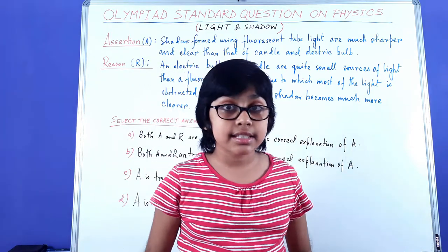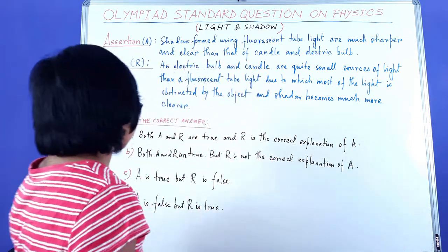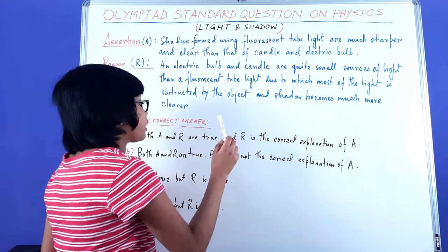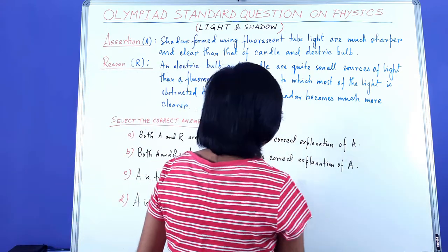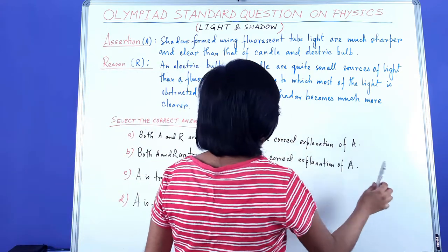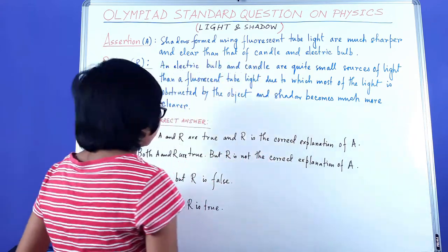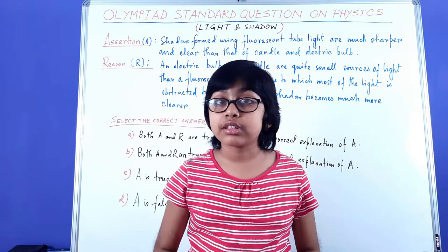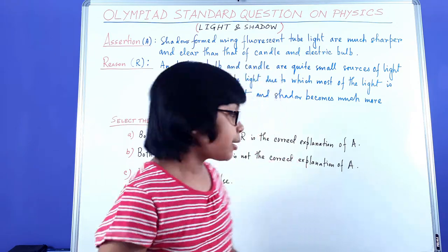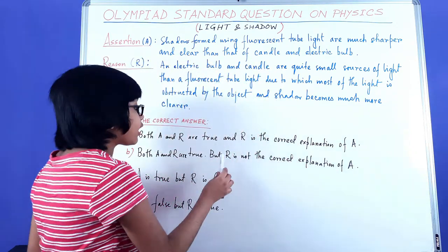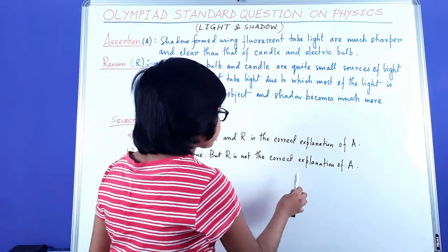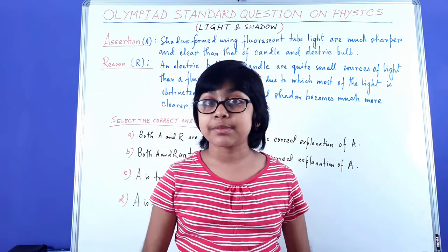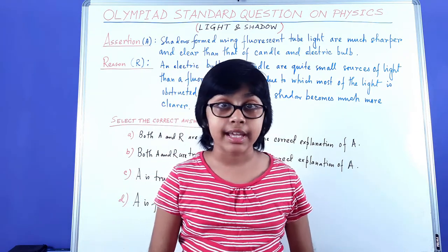In the next option, we have both A and R are true, but R is not the correct explanation of A. In this case, the assertion and reason are both correct, but R has no relation with A, so R is not the correct explanation of A.